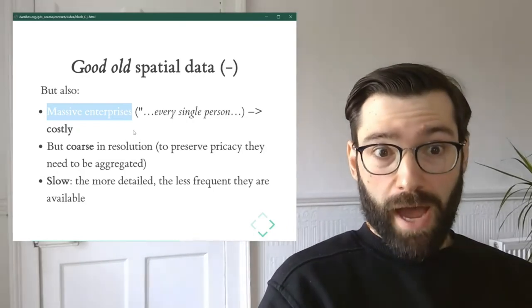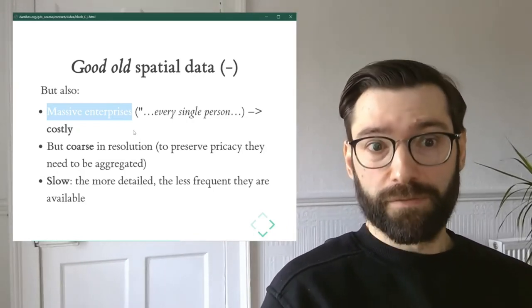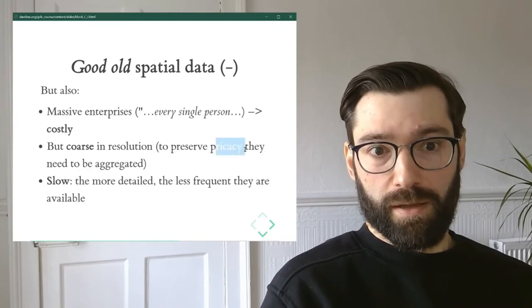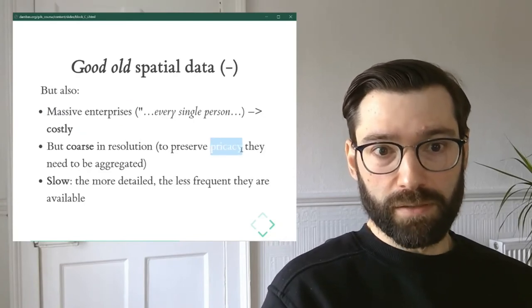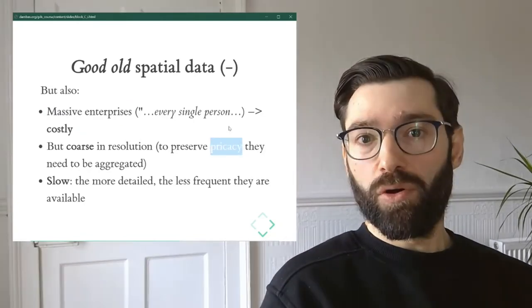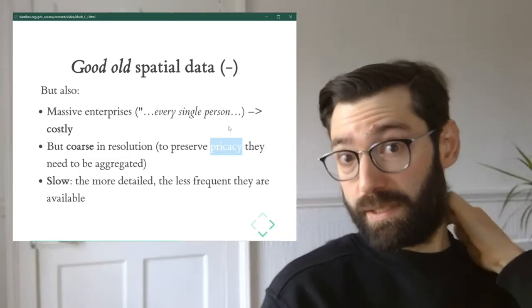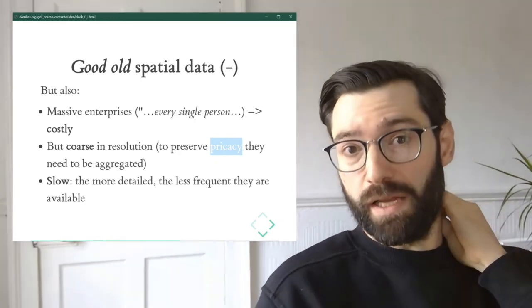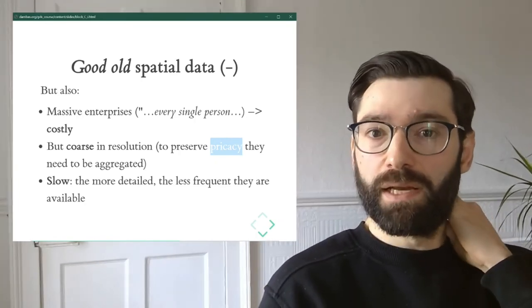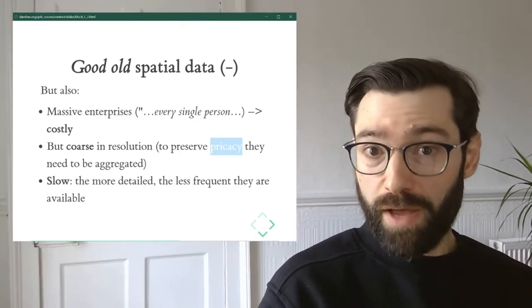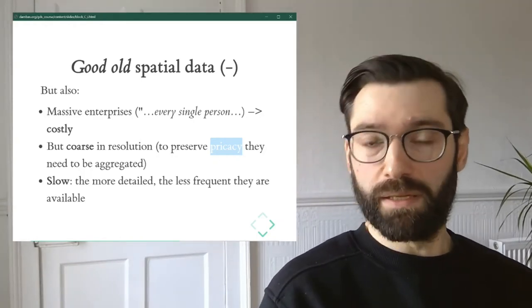Because of that, and also because of privacy, well-founded privacy concerns, even though these data sets are collected super finely grained, the census is mailed to every person in the country, which means you end up getting a data point for every person or every household really in the country.